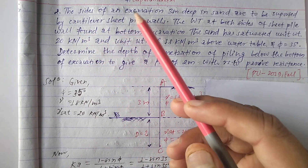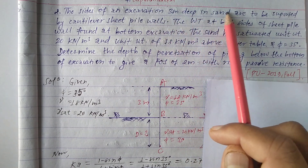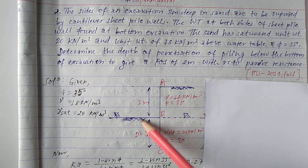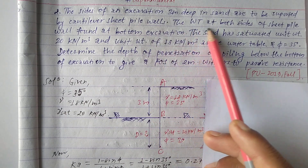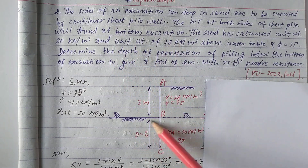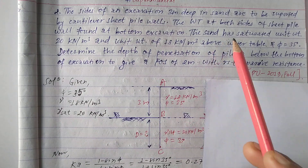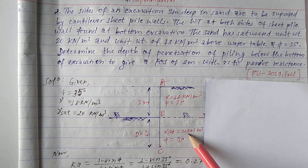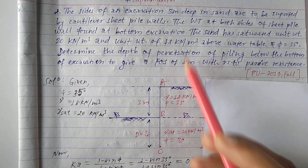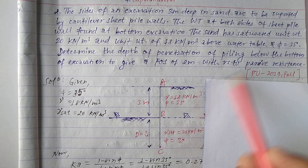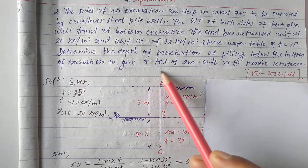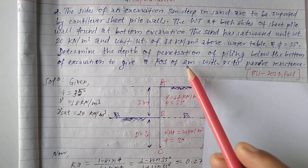Let's see the problem. The sides of an excavation three meters deep in sand are to be supported by a cantilever sheet pile. The water table is found at the bottom of the excavation on both sides of the sheet pile. The sand has a saturated unit weight γsat = 20 kN/m³, unit weight γ = 18 kN/m³, and φ = 35°. Determine the depth of penetration of the pile below the bottom of excavation to give a factor of safety equal to 2.